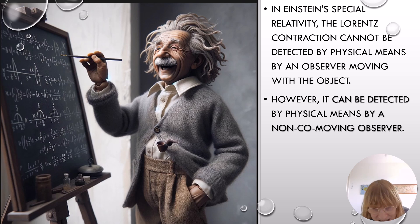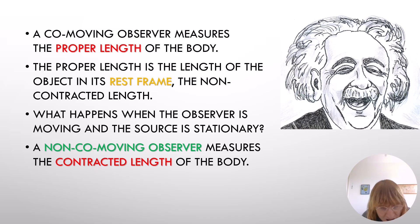In Einstein's special relativity, the Lorentz contraction cannot be detected by physical means by an observer moving with the object. However, it can be detected by physical means by a non-comoving observer. A co-moving observer measures the proper length of the body. The proper length is the length of the object in its rest frame, the non-contracted length. What happens when the observer is moving and the source is stationary? A non-comoving observer measures the contracted length of the body.